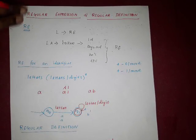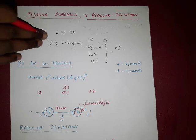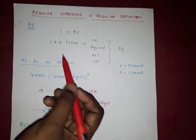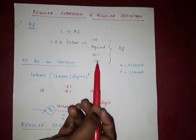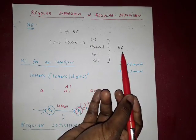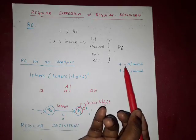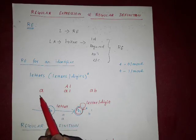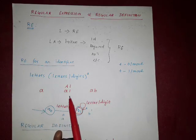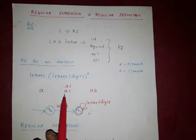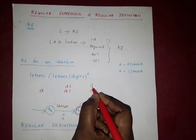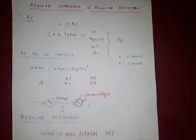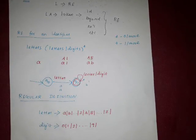Regular expression is nothing but a representation of any language, and every language can be represented by some regular expression. Lexical analysis is generally used to identify tokens, and there are many types of tokens. To identify them, we need to know regular expressions. There are two important notations: star and plus. The regular expression for an identifier is any letter followed by letters or digits, either lowercase or uppercase. For such regular expressions, we give definitions — that is known as regular definition.